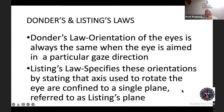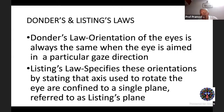Donders' and Listing's laws are important but rarely discussed. Donders' law states that the orientation of the eyes is always the same when gaze is directed in a particular direction. Listing's law specifies that the axis used to rotate the eye is confined to a single plane — Listing's plane — so no matter what route the eye takes, the final position is always the same. Listing's law essentially restrains torsion, because uncontrolled torsion would prevent binocular single vision.